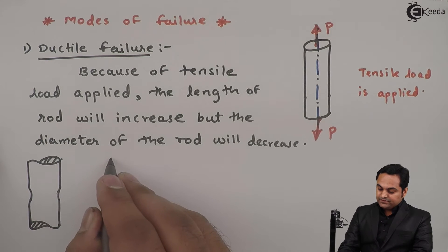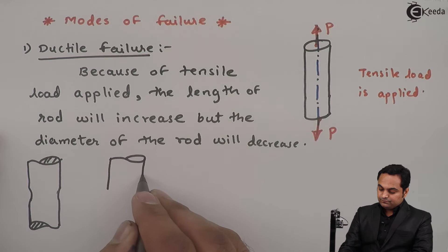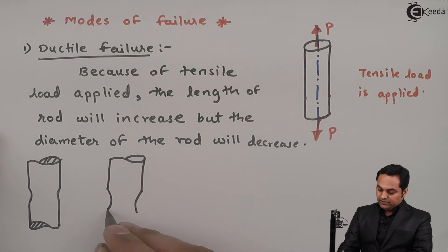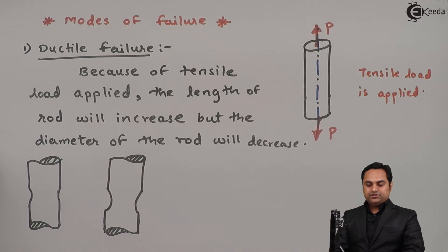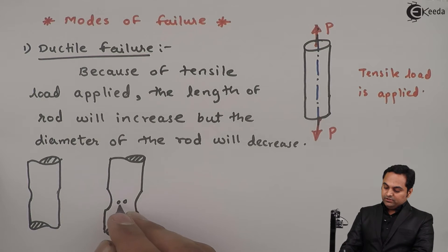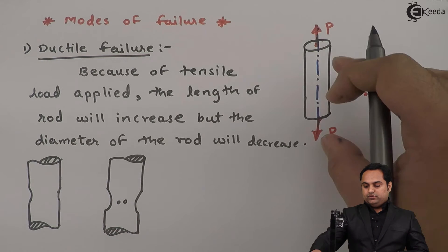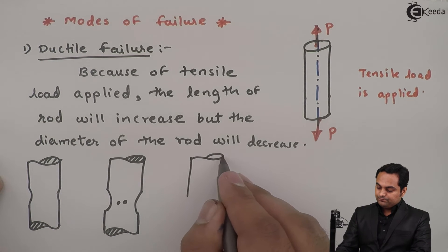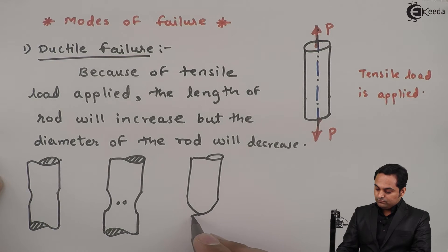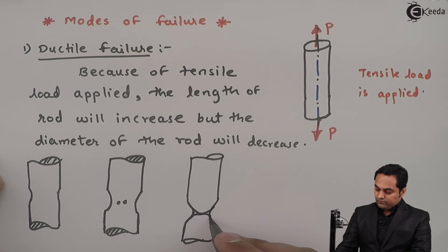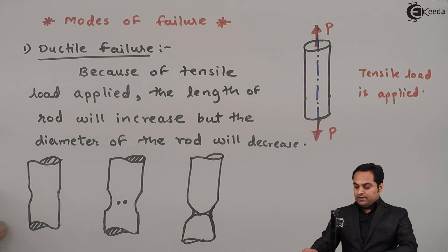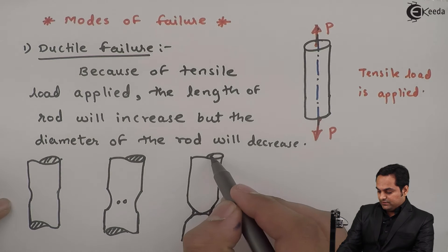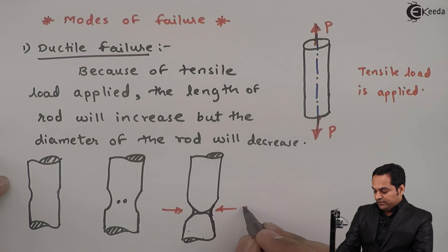If there are internal holes present, because of the action of tensile load, these internal holes will combine. There will be further reduction in the dimensions and as we can see there is a neck formation.